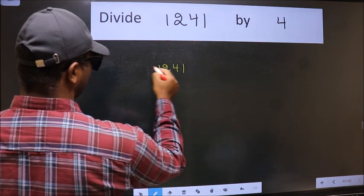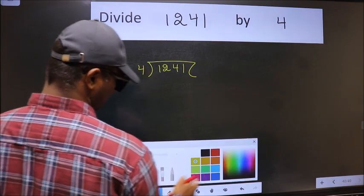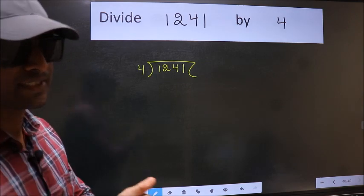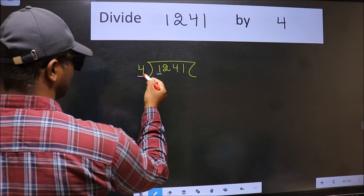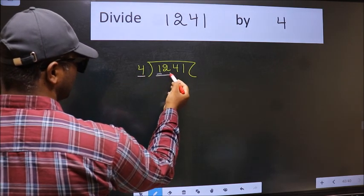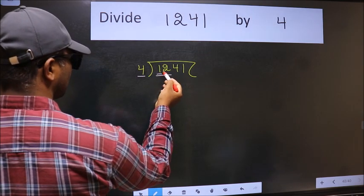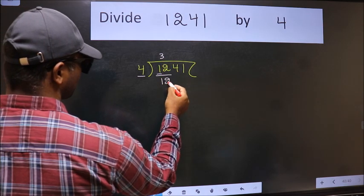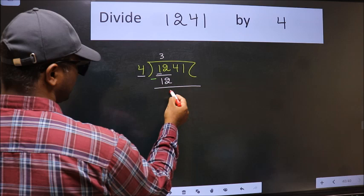1241 and 4 here. This is step 1. Next, here we have 1 and here 4. 1 is smaller than 4, so take 2 numbers: 12. When do we get 12 in the 4 table? 4 times 3 is 12. Now we should subtract. We get 0.